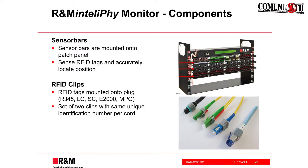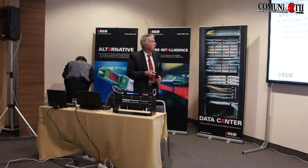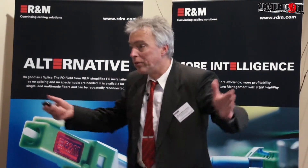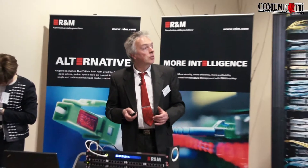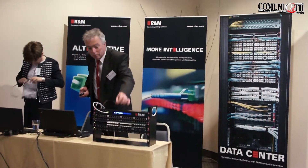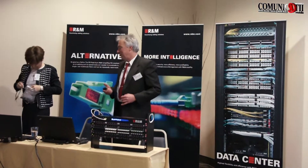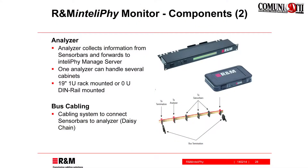The clips are read by the sensor bars. The sensor bars contain RFID readers, and with this we can detect the position and type of a cable in the network. Sensor bars and RFID clips don't work on their own — we have two additional components which we need. One is an analyzer (other people call this a scanner in the AIM world). Then we have a cabling system — a small ribbon cable running from the analyzer to all sensor bars. Using this cable, the analyzer can read what is written on the RFID tags.